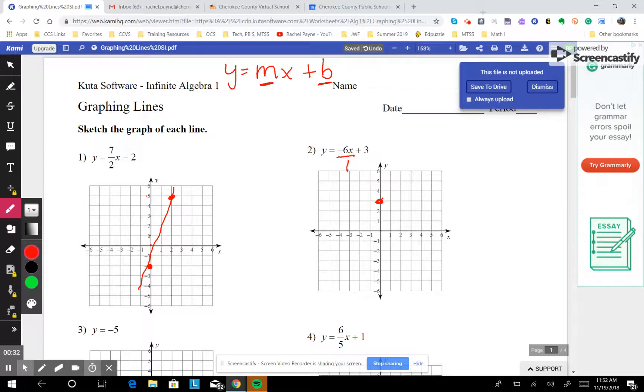So rise negative 6, 1, 2, 3, 4, 5, 6, run positive 1. There's your line.